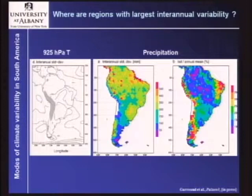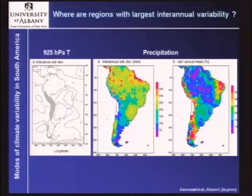There's another way of looking at this: standardize the data and look at the relative change compared to the absolute amount of precipitation falling — variability in percent. If you do that, it's an inverse pattern, and now you have the largest interannual variability in precipitation in the dry regions: northeastern Brazil, and along the arid diagonal from southern Peru, northern Chile, crossing over the Andes into the Argentinian Pampas. Something to keep in mind.